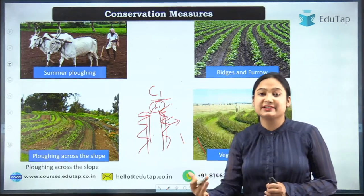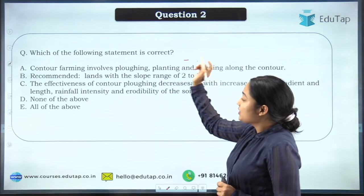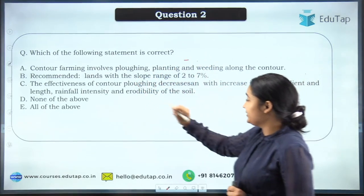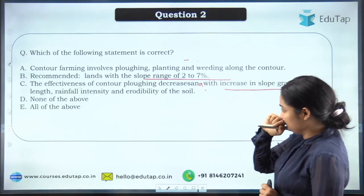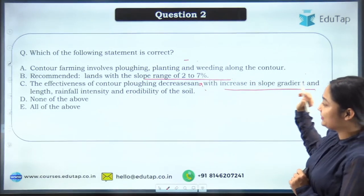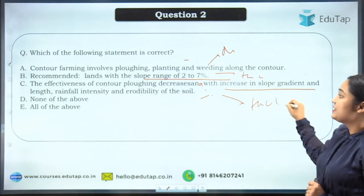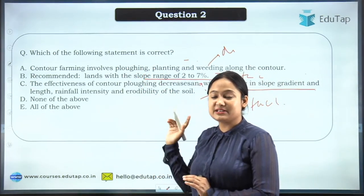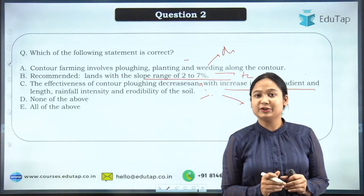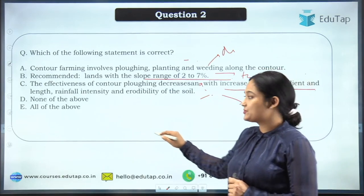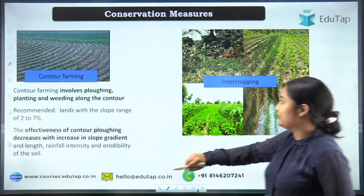The next question asks which statements about contour farming are correct. The options cover its definition, slope recommendation, and factors affecting its effectiveness. The correct answer is all of the above. Contour farming involves plowing, planting, and weeding along the contour line. The recommended slope range for contour farming is two to seven percent, and its effectiveness decreases with increases in slope gradient.